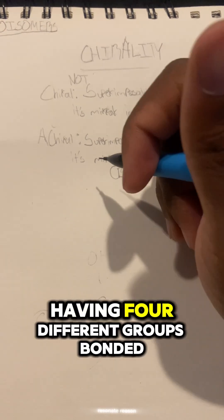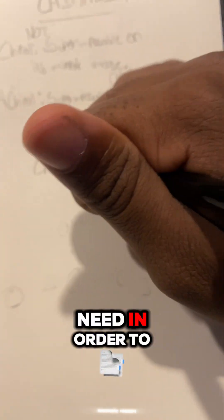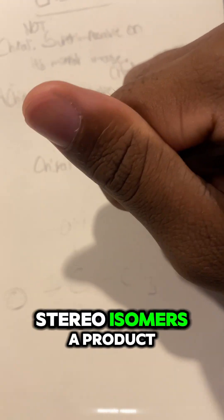So what I'm talking about with the carbon atom having four different groups bonded to it, that is called a chiral center. And that's what we're going to need in order to find out how many stereoisomers a product can have.